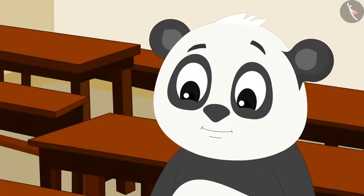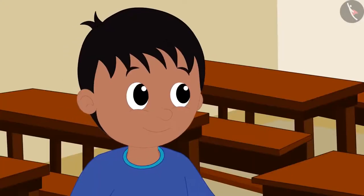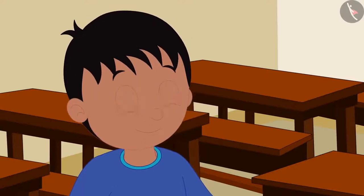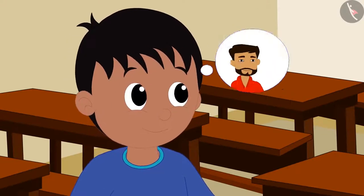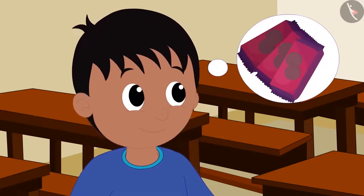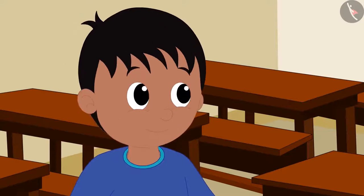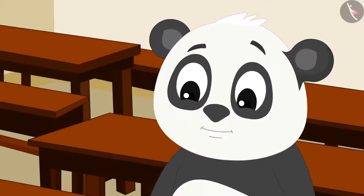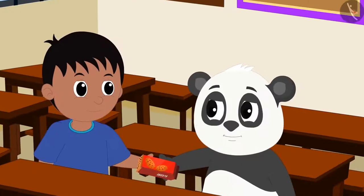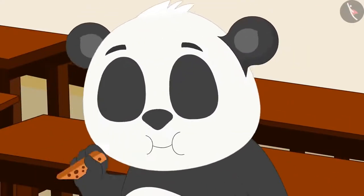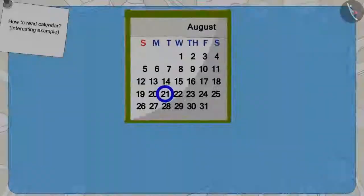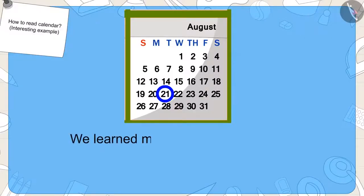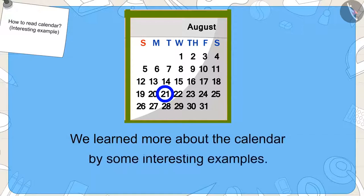Golu got very excited on hearing this. Raju told him that when his uncle would come from abroad, he would definitely give Golu some of those delicious biscuits. Golu became very happy. Raju and Golu shared Golu's biscuits and ate with great pleasure. Kids, in this video, we learned more about the calendar with some interesting examples. In the next video, we will look at some misconceptions related to this.